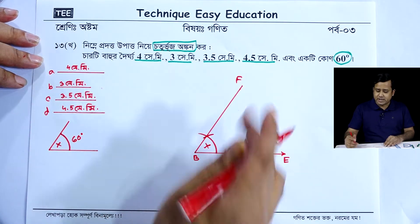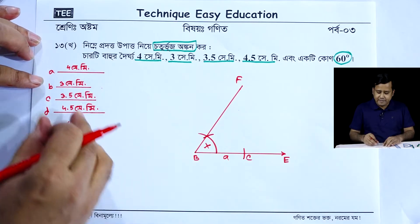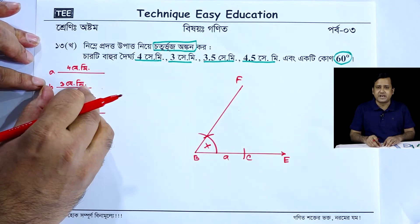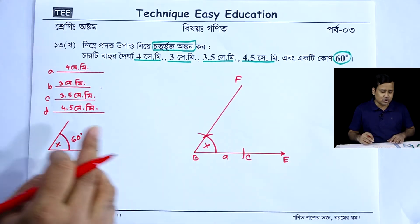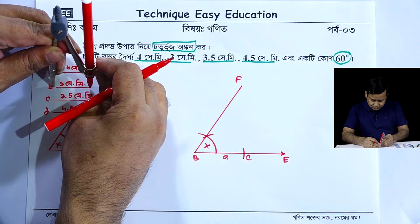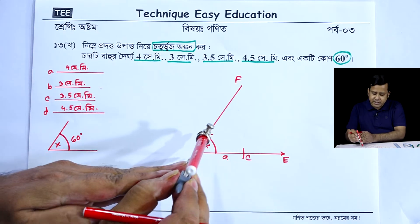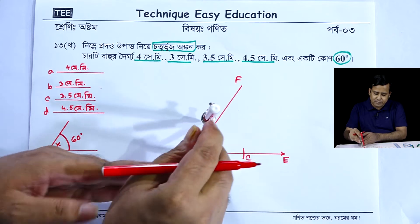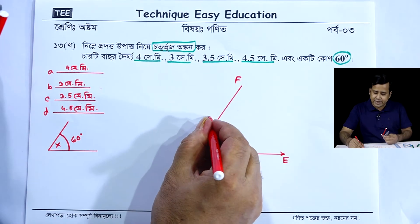Now, BF is equal to B. So BF is equal to B. BF is equal to B. Now, BF is equal to BF. So now BF is equal to BF. So, this is A.